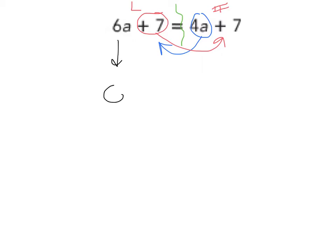So 6a is already on the left, it'll stay. Then when this 4a comes left, it turns to a minus 4a. Equal sign. The 7 stays on the right hand side. Then when this positive 7 comes over, it's going to turn to a minus 7.